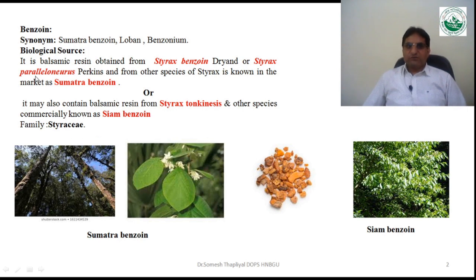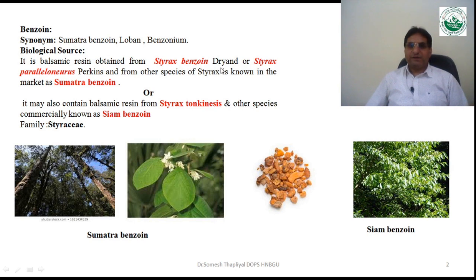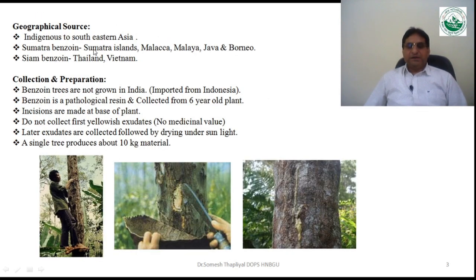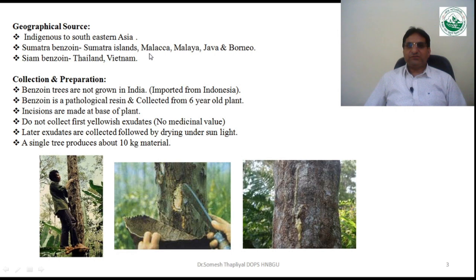Both species belong to the family Styracaceae. There are two varieties of benzoin: Sumatra benzoin and Siam benzoin. The botanical name of Siam benzoin is Styrax tonkinensis, while Sumatra benzoin is Styrax benzoin Dryander or Styrax paralleloneurum Perkins. Geographically, the drug is indigenous to South-East Asia; Sumatra benzoin is cultivated in Sumatra, Malacca, Malaya, Java, and Borneo, whereas Siam benzoin is cultivated in Thailand and Vietnam.